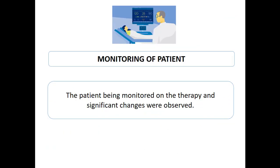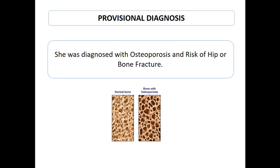The patient was monitored and it was observed that her fracture risk was very low in osteoporosis and her calcium level increased. In the provisional diagnosis, she was diagnosed with osteoporosis and there was a risk of hip or bone fracture. With this, we have solved these five steps.